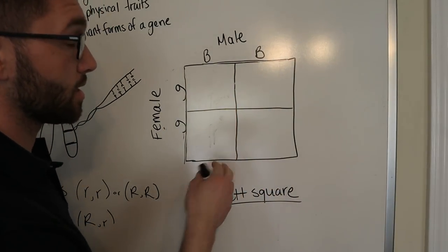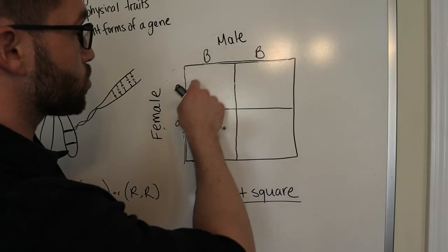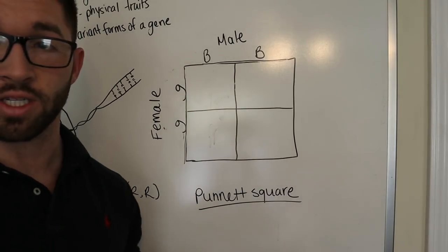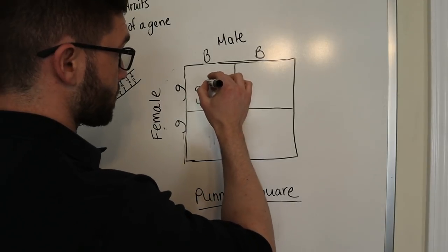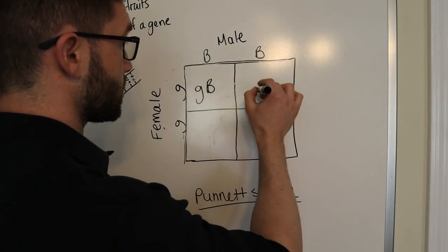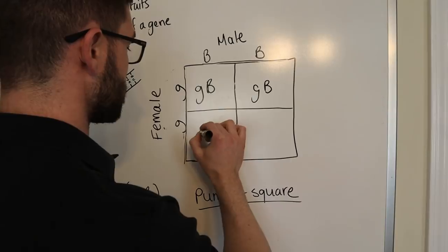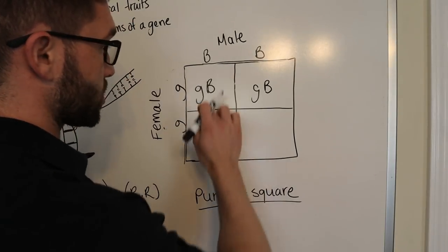When crossing these, in this cross, you only want two alleles per box because that's all the gene contains. So, lowercase g, uppercase B, and for this instance, it's actually all the same because you're just matching up each one.